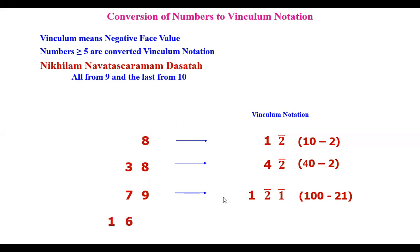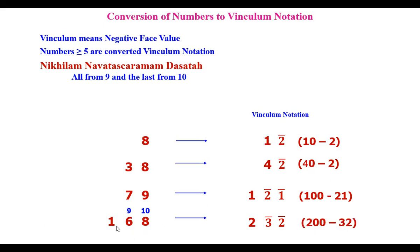I take another number, one sixty-one, and convert to vinculum notation. I take ten and nine for the bigger digits; for the smaller digit, nothing is necessary. Convert: 10 minus 8 is bar 2; 9 minus 6 is bar 3; and here we have 1 — so 1 plus 1 becomes 2. The meaning is: two hundred minus thirty-two is this number.